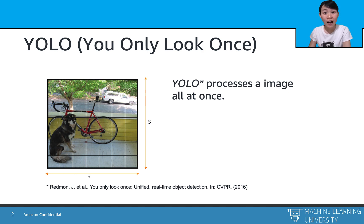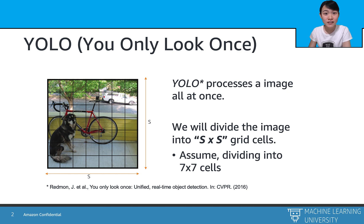So how does YOLO work? Let's look into the detail of the plot on our left. First, we divide the image into S by S grid cells. For example, assuming we divide this image into 7 by 7 cells.